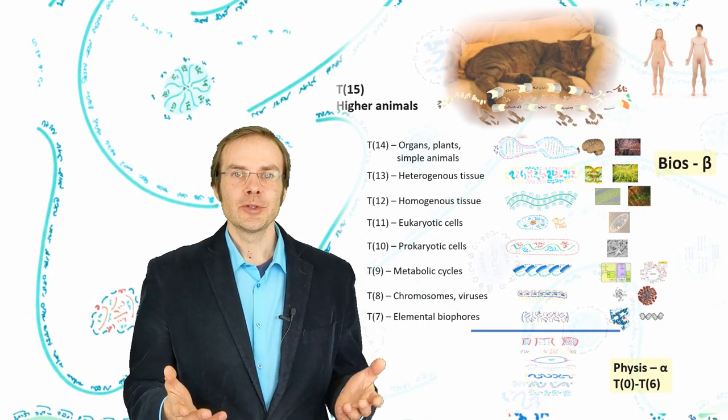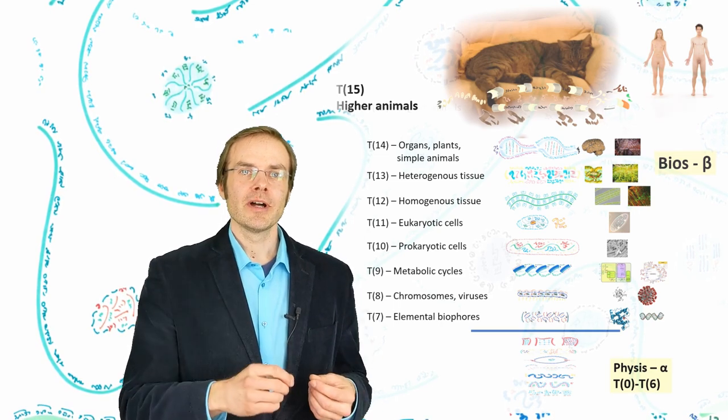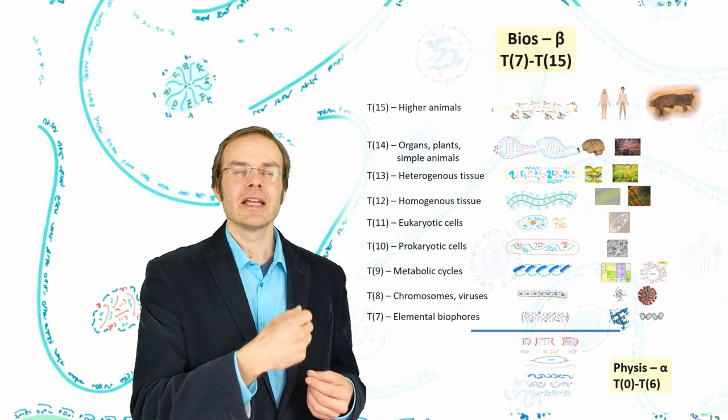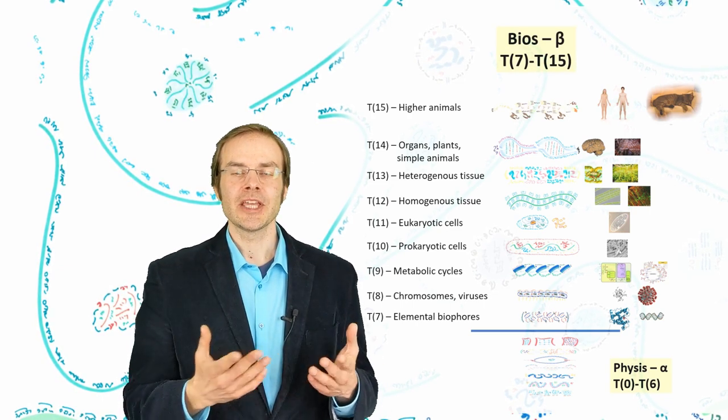And that's the conclusion for the realm of beta, reaching from totality 7 till 15. So it's nine levels we can distinguish here.